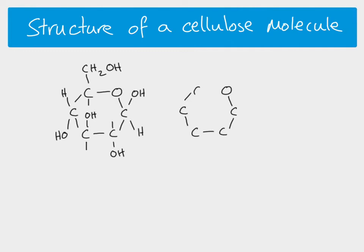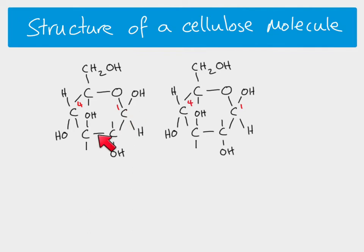Cellulose is a polysaccharide, which means we have to join together lots of monosaccharides with glycosidic bonds. The beta glucose molecules are going to join together with 1,4 glycosidic bonds, just the same as in starch and glycogen, but this time it's beta glucose instead of alpha glucose. To make that glycosidic bond, we form a bond between the hydroxyl groups on carbon one and carbon four.